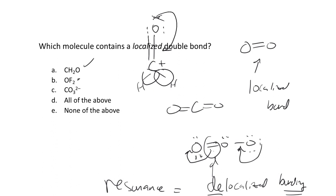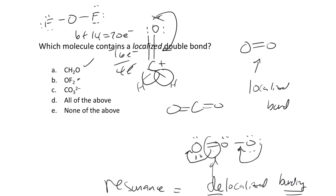For OF2: oxygen is the central atom with lone pairs; 6 + 14 = 20 electrons, with 16 used for the F lone pairs, leaving four on oxygen — two lone pairs. Central O with two lone pairs, two single bonds to fluorine, zero formal charges throughout. Oxygen is second row so we wouldn't expand its octet. So OF2 has single bonds only and no double bonds at all.